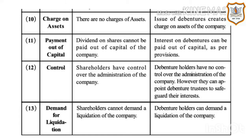In debentures, the issue of debentures creates a charge on the assets of the company. Eleventh point — Payment out of Capital: Dividend on shares cannot be paid out of the capital of the company, whereas interest on debentures can be paid out of capital as per provisions.